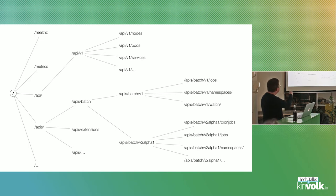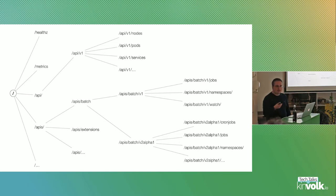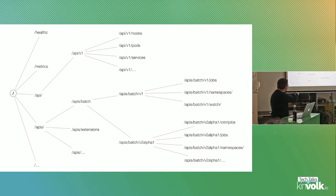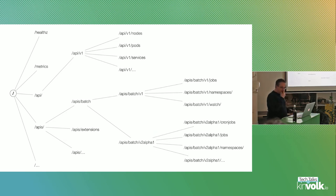For a few versions you also have API groups: the batch group which has CronJobs and similar things, a big extensions group, and a number of others — like StatefulSets, Ingress, and NetworkPolicies — all somewhere in this branch of the API. But as I said, it's not really the context today to show all the details.